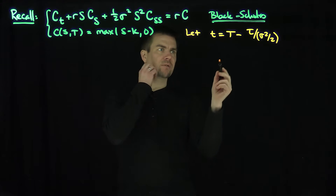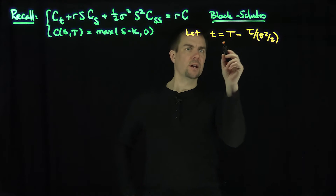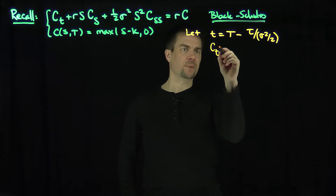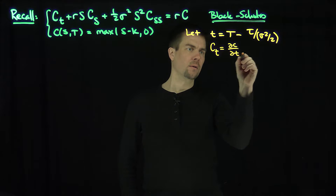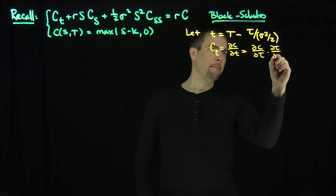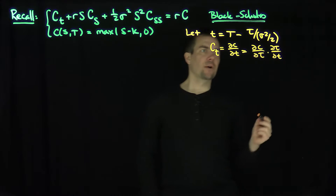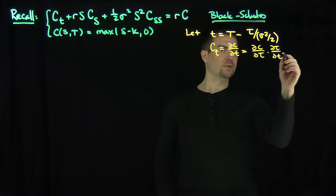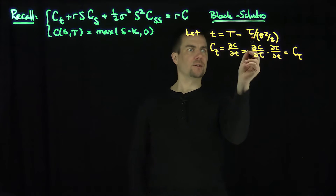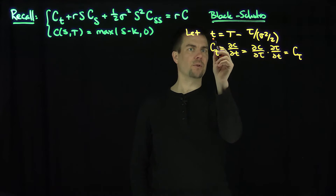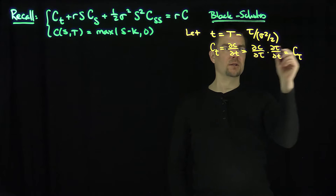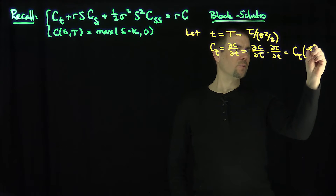Now we can see that the tau derivative and the t derivative are related. We have partial c partial t equals the derivative of c with respect to tau times the derivative of tau with respect to t. Clearly the derivative of tau with respect to t is going to be negative sigma squared over 2. So partial c partial t is c sub tau times negative sigma squared over 2.